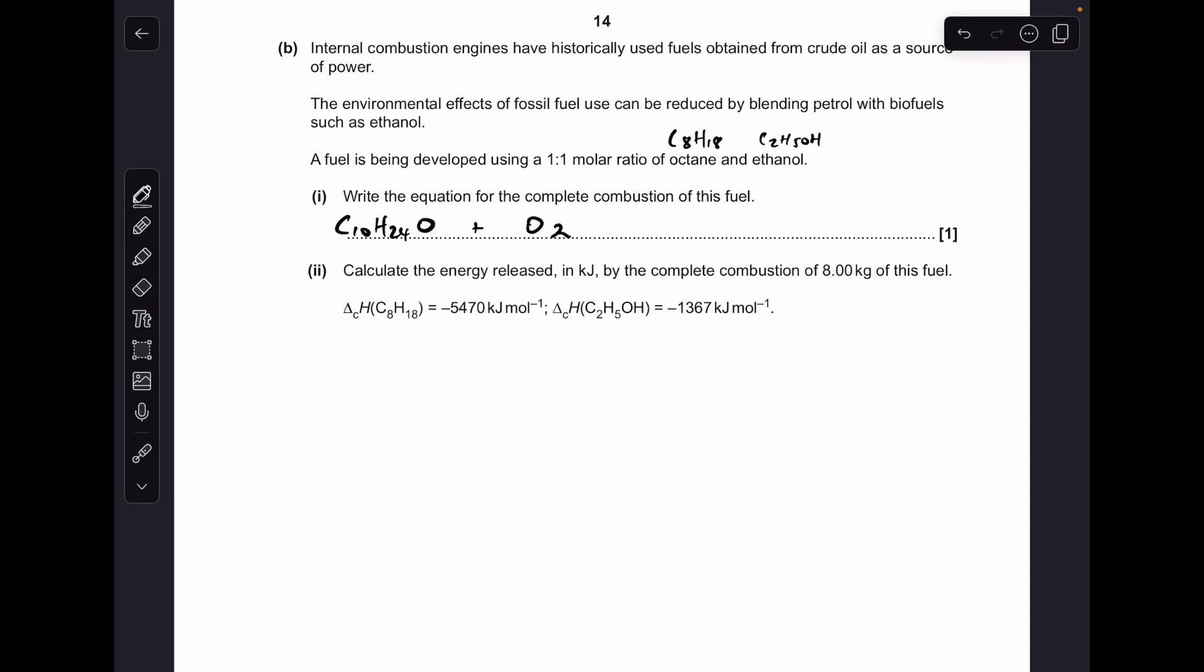And all we need to do now is just react that with oxygen completely, so we're going to make carbon dioxide and H2O, and then just balance it. So 10 C's means 10 CO2s, 24 H's means 12 H2O. We just need to balance the oxygens now, so on the right hand side we've got 10 times 2 is 20 plus 12, 32 oxygens on the right. There's one in the fuel, so we need 31, so I just put a top heavy fraction in there, 31 over 2, or you could go 15 and a half if you want.